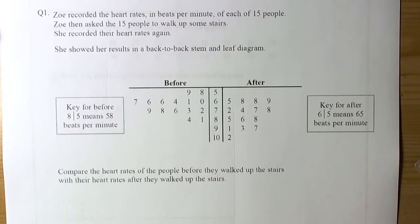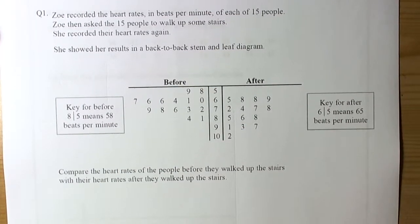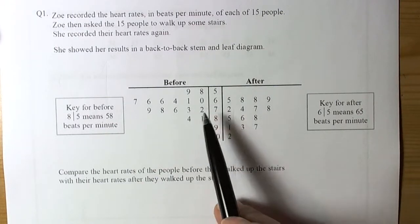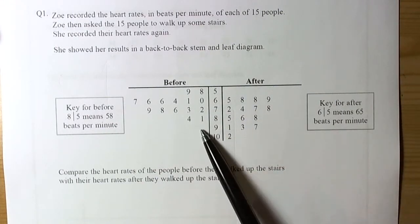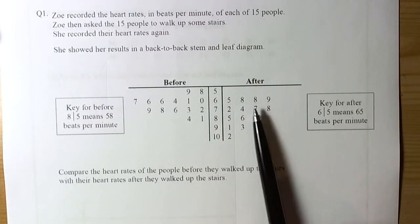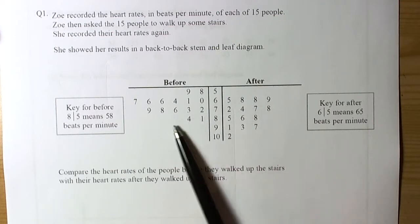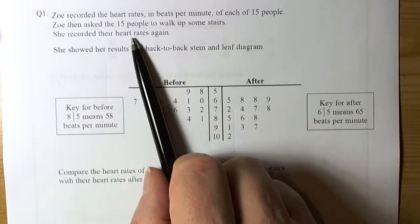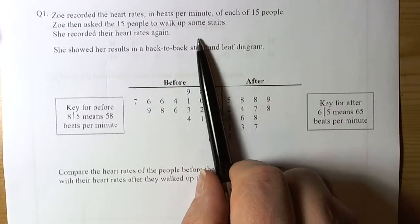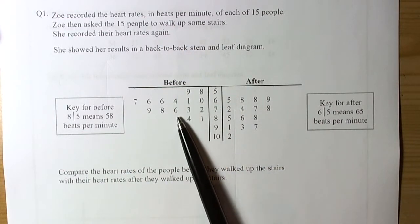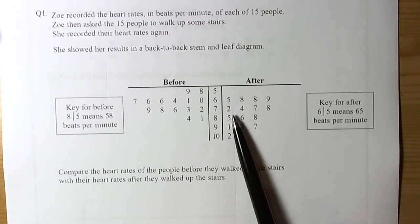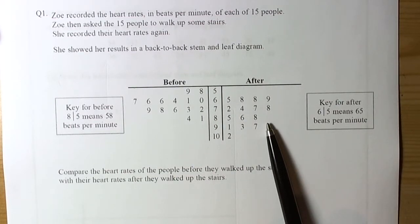So we are looking here at a summary of working with stem and leaf diagrams and the kind of questions they ask you at GCSE exams. So here we've got a stem and leaf diagram that's called a back to back stem and leaf diagram. It's showing you two sets of data in the one diagram. So it's about heart rates in a particular test. So this was the heart rate before they did the test of walking on the stairs. Then this was the heart rate after they walked up the stairs.